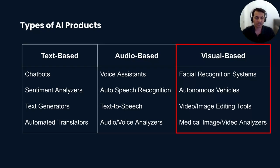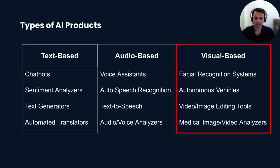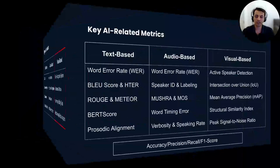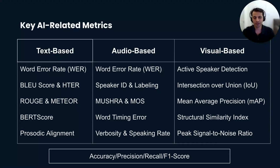We can categorize AI products in many ways, but I personally found this text, audio, and visual categorization a great way of looking at AI products in terms of metrics, training data, and their applications. Let's go through metrics for each of these AI product categories.